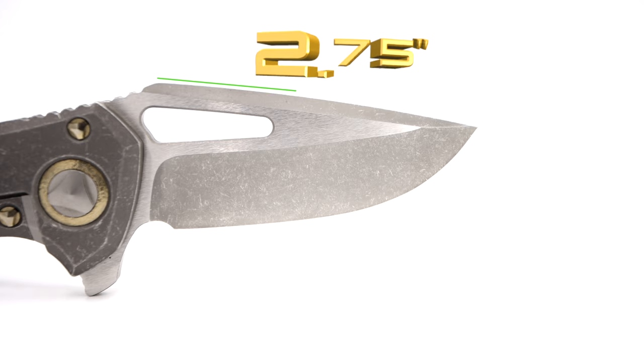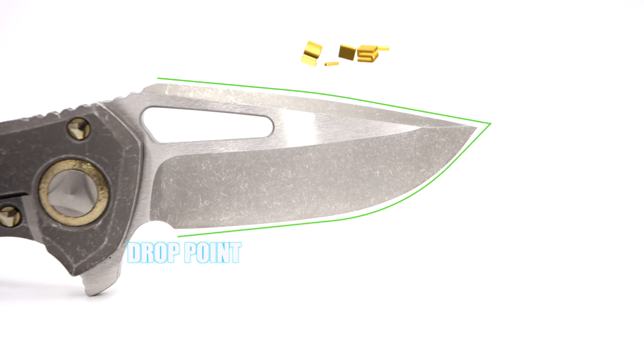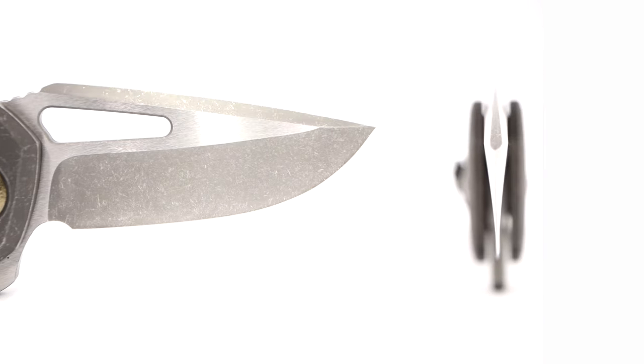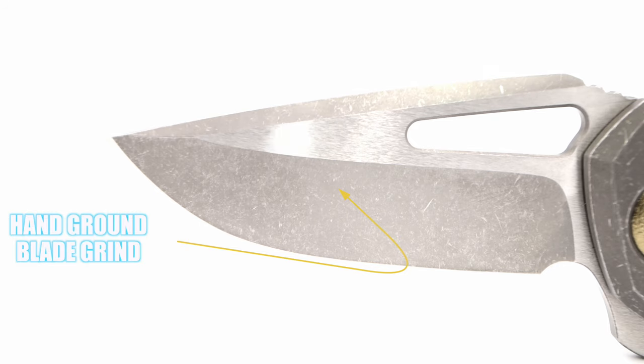Sporting a two and three-quarter inch drop point blade comprised of CTS 204P steel, the blade is 13 hundredths of an inch thick, followed by a hand ground hollow grind.